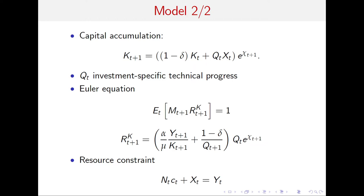The key equation in the model is the Euler equation — the only behavioral equation. MT is the stochastic discount factor and RT+1^K is the contingent return on capital. It has two parts: alpha*Y/(mu*K) is the rental rate of capital, and (1 minus delta)/QT+1 is the capital gains. The return on capital is risky through chi-T+1, but all the other variables like Y/K are constant. The rental rate is alpha/mu because market power depresses the rental share.